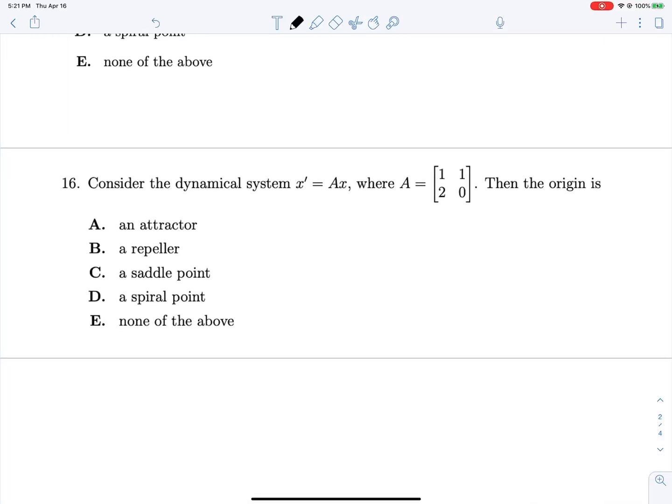And then for 16, our final question, we're just doing the same thing. One minus lambda times negative lambda minus two equals zero. Lambda squared minus lambda minus two equals zero. This factors to lambda minus two times lambda plus one equals zero. And would you look at that? Another saddle point.